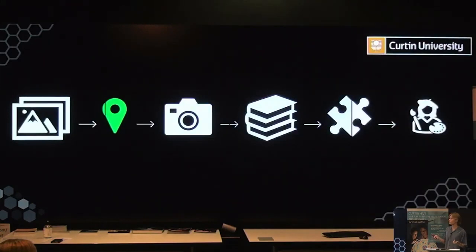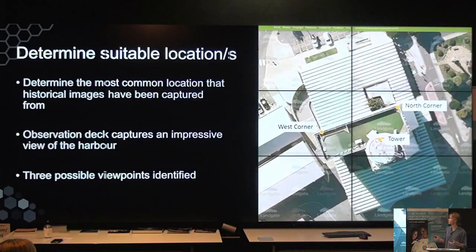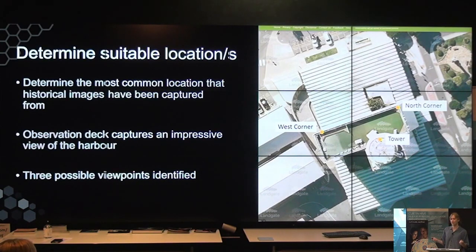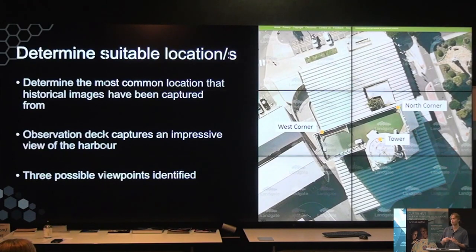The next stage is to determine the location from which most images were taken. From the observation deck there are three viewpoints: the north corner, the west corner and the tower. The west corner offers views of the port entry including the slipway, forest landing, A Shed and Northmore Lighthouse. The north corner looks out onto Victoria Quay, B Shed, C Shed, D Shed, the CBH silos before they were demolished, and the north quay in the distance.